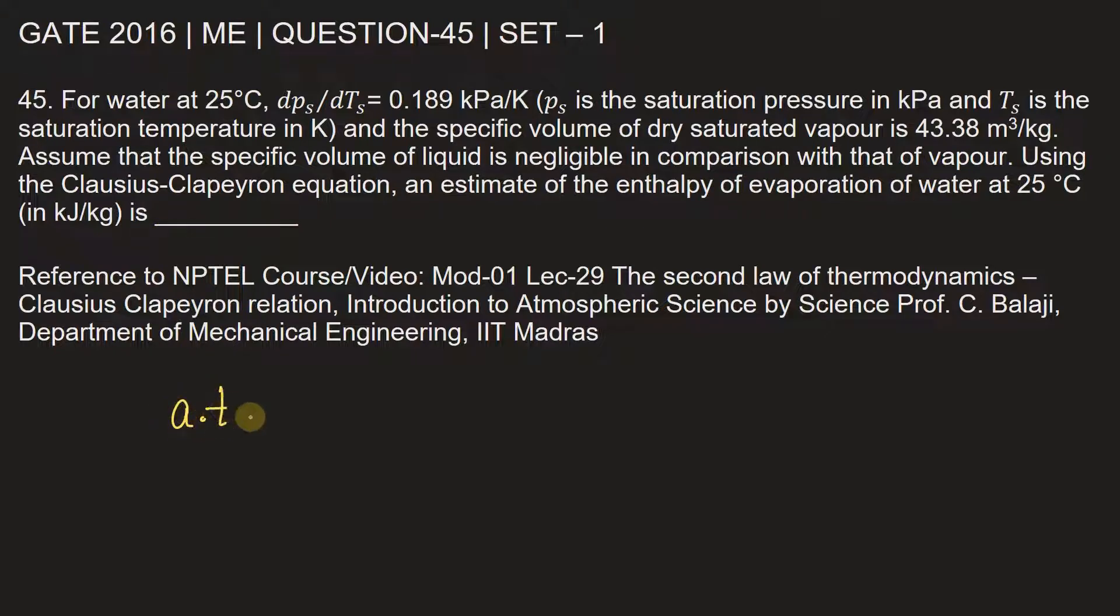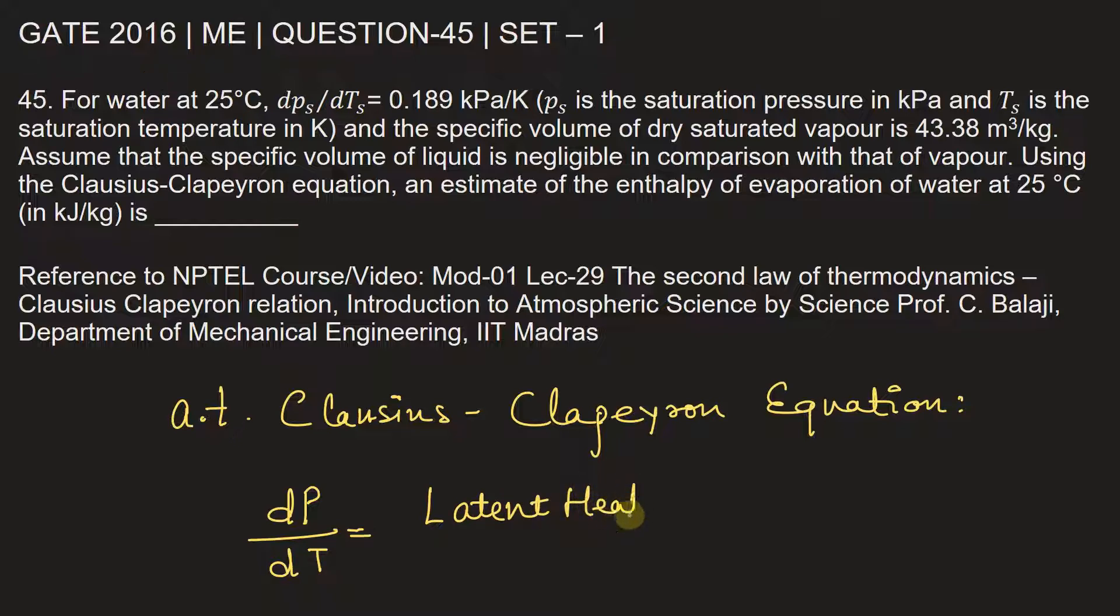According to Clausius-Clapeyron equation, the change in pressure with respect to temperature is given by latent heat multiplied by saturation pressure divided by saturation temperature squared multiplied by R, the gas constant.